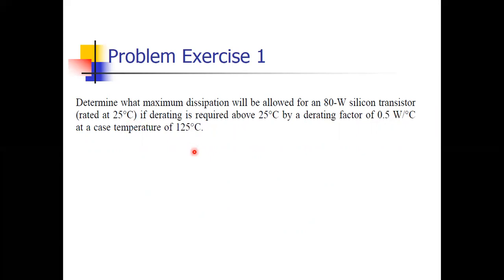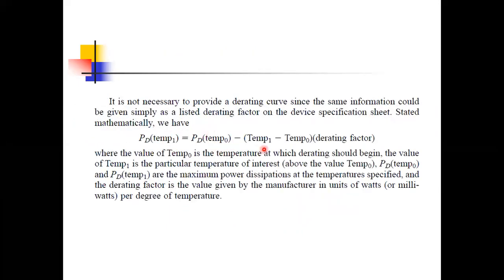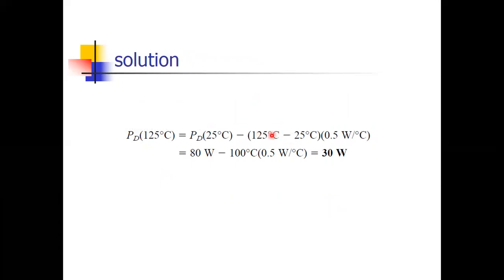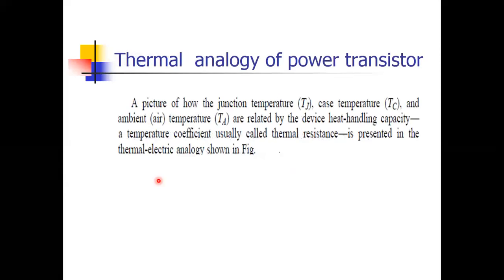The formula for maximum dissipation is: initial dissipation minus (temperature difference × derating factor). The initial temperature is 25°C for this 80-watt silicon transistor. Applying the formula: 80 − (125 − 25) × 0.5 = 80 − 50 = 30 watts. So the power handling capacity at 125°C is 30 watts. You can similarly calculate power dissipation at 130°C, 140°C, or 200°C.